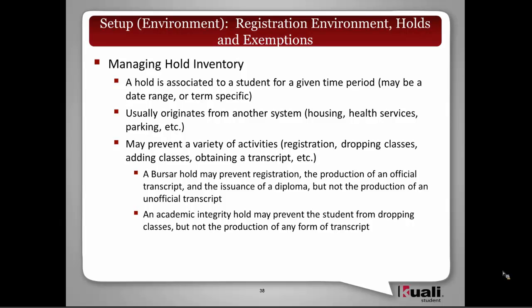An academic integrity hold may prevent the student from dropping classes, but not the production of any form of transcript. A good example would be a plagiarism case where the student received a failing grade on the plagiarized item, and the Student Conduct Office determined the student isn't able to drop that class — they have to take the effects of their cheating and it will appear on their transcript.